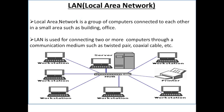First we have Local Area Network. A Local Area Network is a group of computers connected to each other in small areas such as a building or office. LAN is used for connecting two or more computers through a communication medium such as twisted pair or coaxial cable.